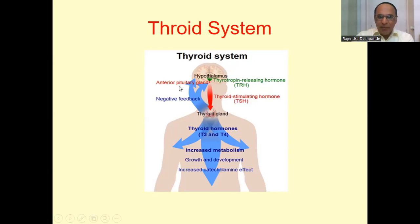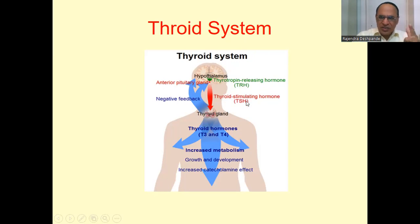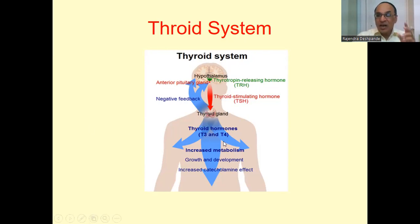The anterior pituitary then signals the thyroid gland. So there are three steps: first the brain's hypothalamus, then below it the pituitary gland, then the thyroid gland in the neck. The pituitary releases Thyroid Stimulating Hormone, or TSH, and in response the thyroid gland produces the hormones T3 and T4.